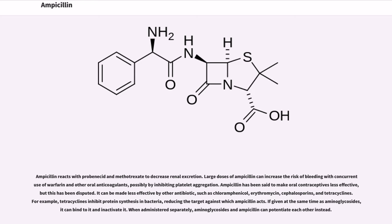For example, tetracyclines inhibit protein synthesis in bacteria, reducing the target against which ampicillin acts. If given at the same time as aminoglycosides, it can bind to it and inactivate it. When administered separately, aminoglycosides and ampicillin can potentiate each other instead.